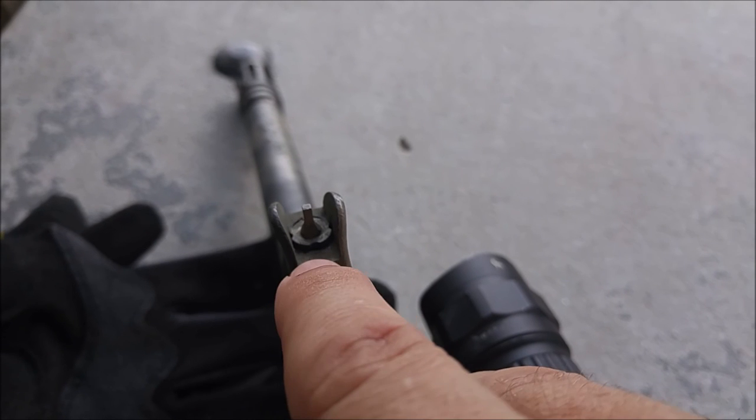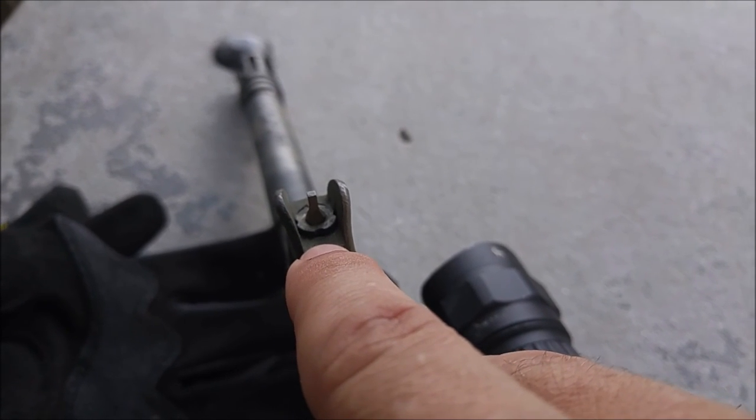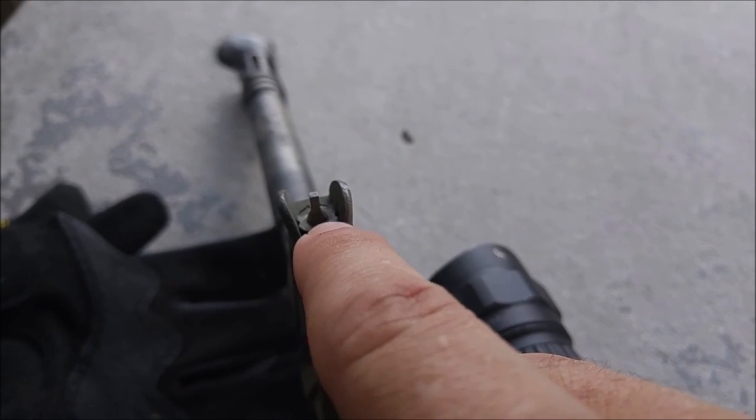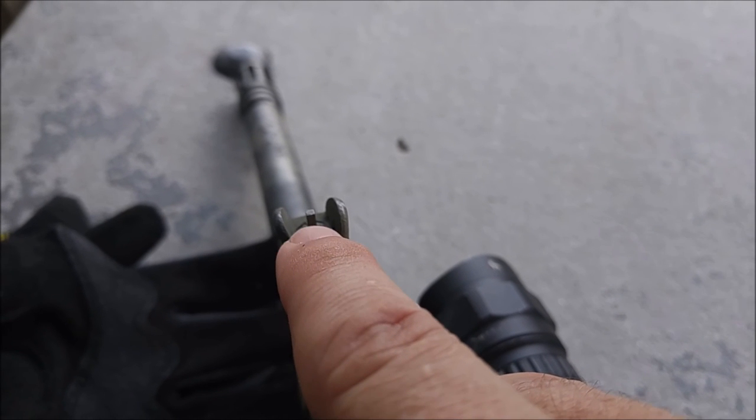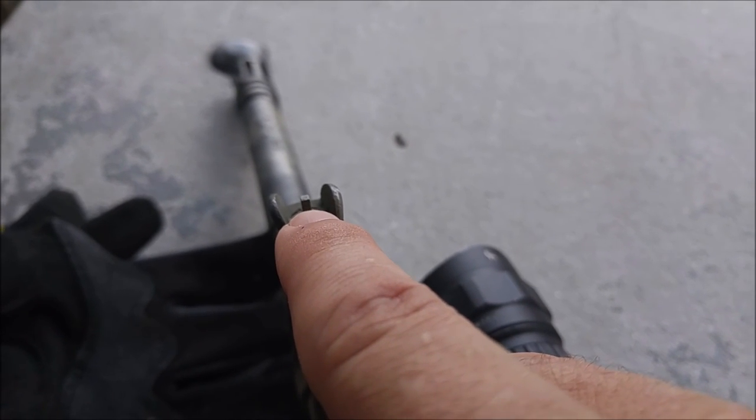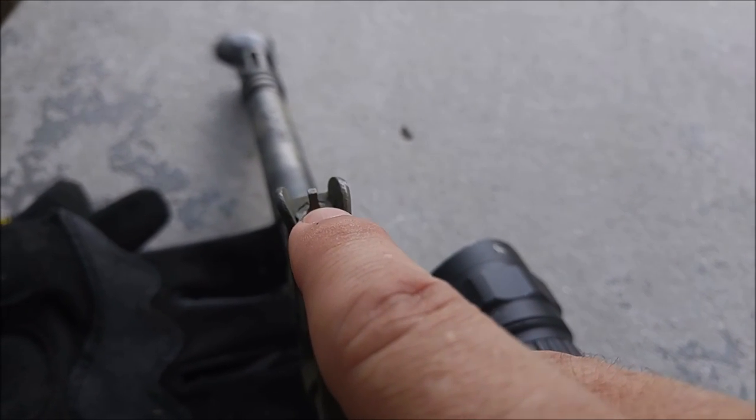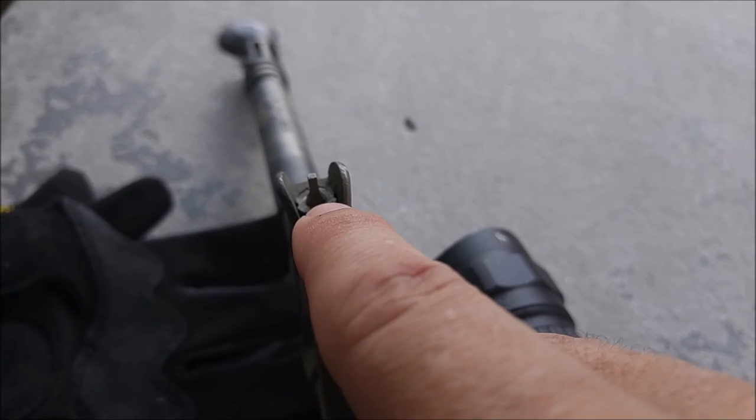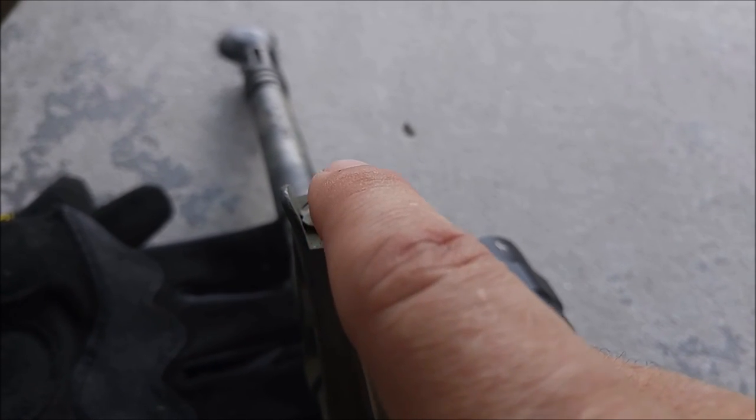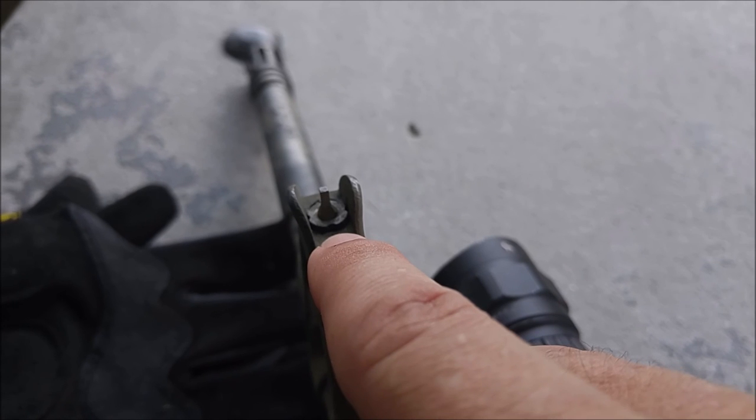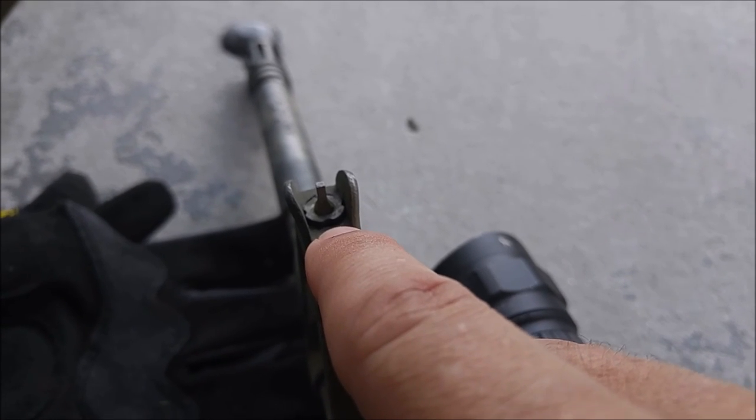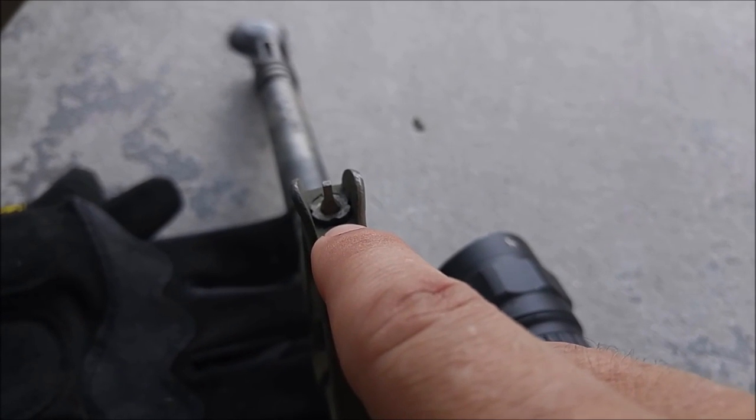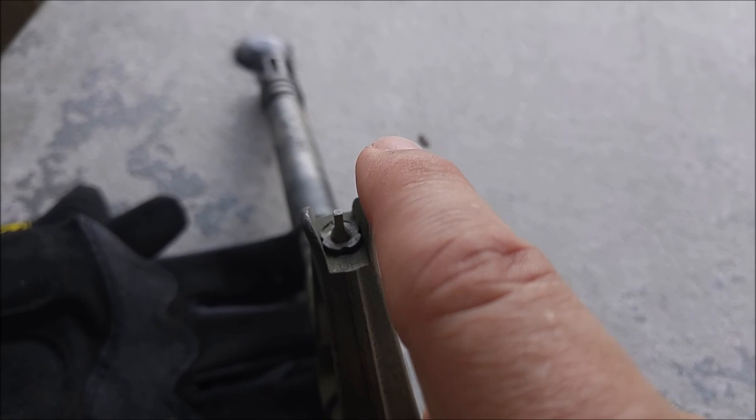The higher you move this front sight post, the lower your round will strike on the target. The lower that you move this front sight post will cause the impact of your round to strike higher on the target. So the ideal place to start is going to be flush.